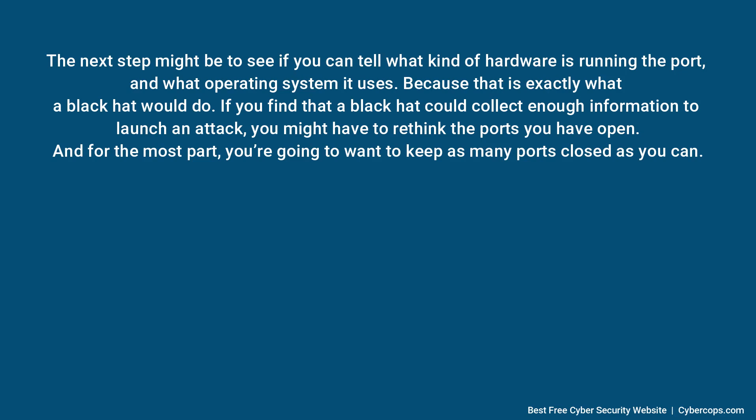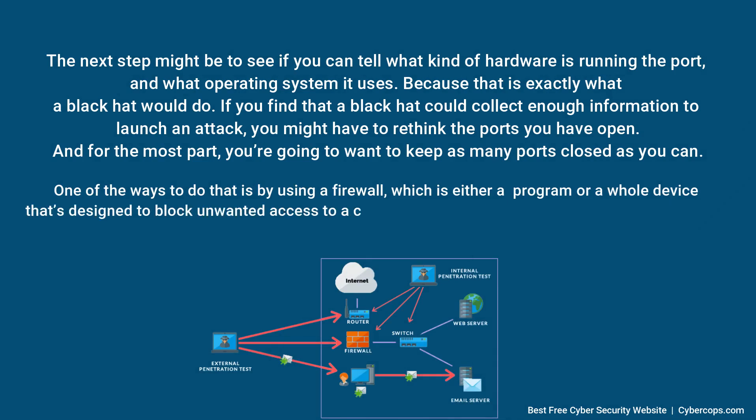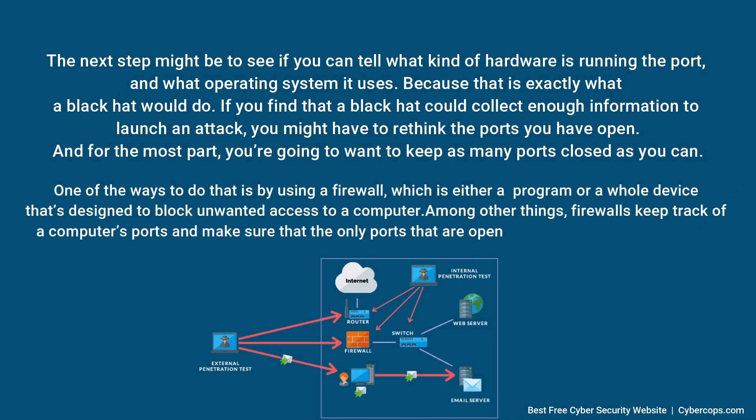You might also find ways to stop machines from disclosing information about themselves. One of the ways to do that is by using a firewall, which is either a program or a whole device designed to block unwanted access to a computer. Among other things, firewalls keep track of a computer's ports and make sure that the only ports that are open are ones that need to be open. They're like a computer's security guard, making sure that all the right doors are locked.